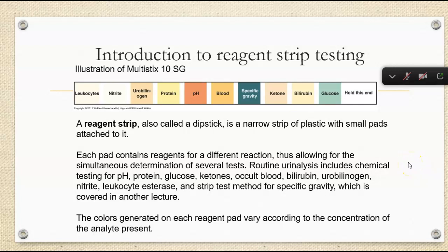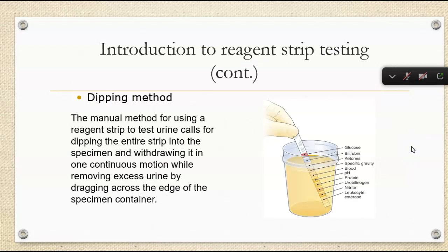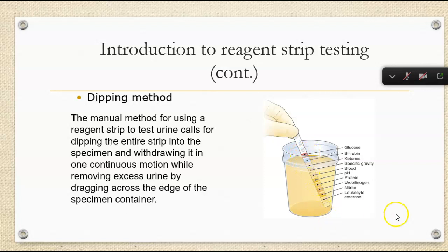A lot of times I've seen videos where they just leave the dipstick in the urine — we can't do that. For our intents and purposes, we're going to utilize hand-dipping in lab. We do have some small analyzers that you'll get to try, and if we can get you out on clinical as part of your hematology rotation, you'll see the automated urinalysis instruments. You're going to dip the entire strip, making sure the glucose pad at the top gets all the way in.